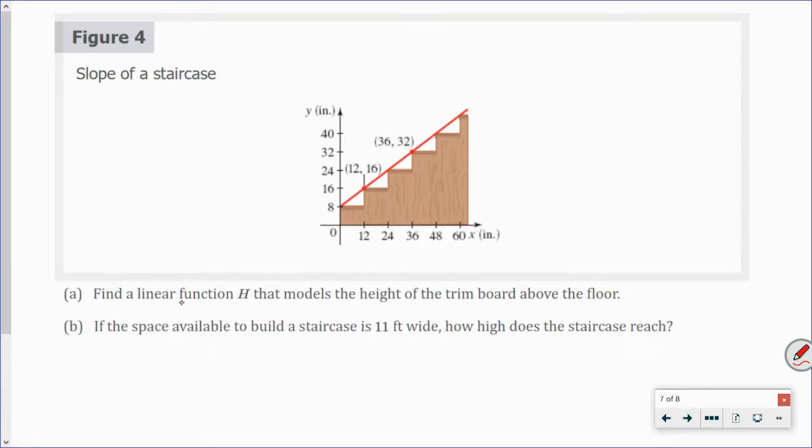Okay. Slope of a staircase. Find a linear function H that models the height of the trim board above the floor. So, we have H of X equals... Now, this red line is kind of... We're finding the equation of that. So, we're given two points here. So, we need to find the slope of those points. So, remember, slope is change of Y over change of X. So, 32 minus 16 over 36 minus 12. So, 32 minus 16 is 16. 36 minus 12 is 24. And if I reduce that... You get 2 thirds. So, your slope is 2 thirds. That means you're going up 2 and right 3. Okay. So, for every 2 inches up, you're going 3 inches deep. So, 2 thirds X plus... And we have to look at where we initially started, which was 8.